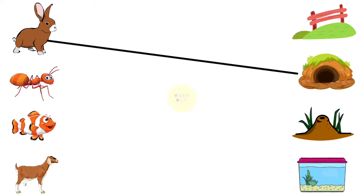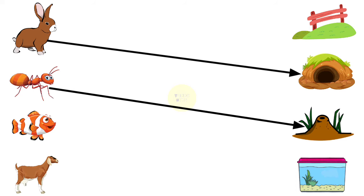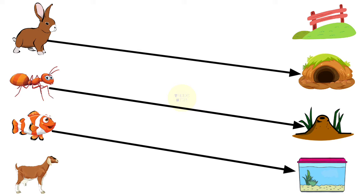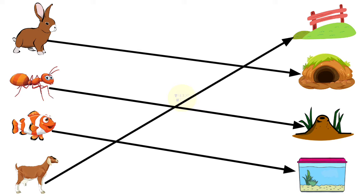Rabbit lives in burrow. Ant lives in anthill. Fish lives in aquarium. Goat lives in fence.